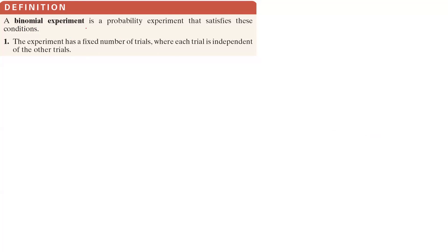So what is a binomial experiment? A binomial experiment is a probability experiment that satisfies the following conditions. First, the experiment has a fixed number of trials where each trial is independent of the others — meaning the outcome of one trial has nothing to do with the next or previous trial.